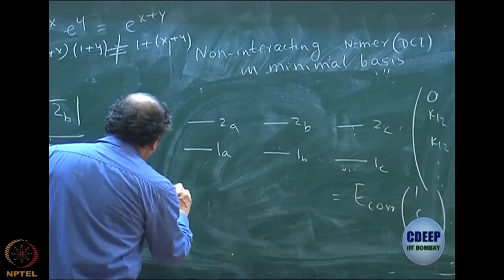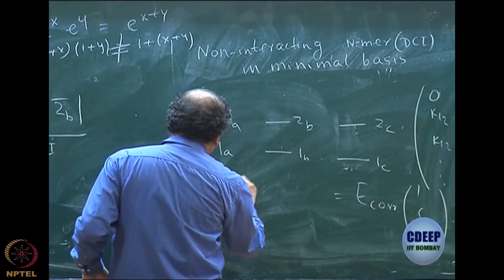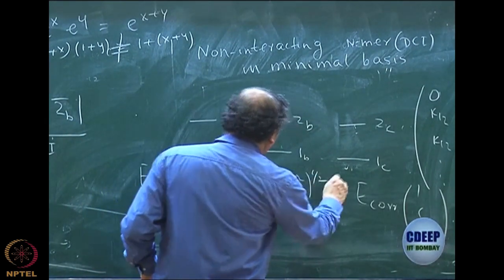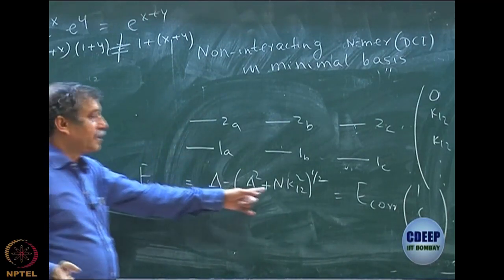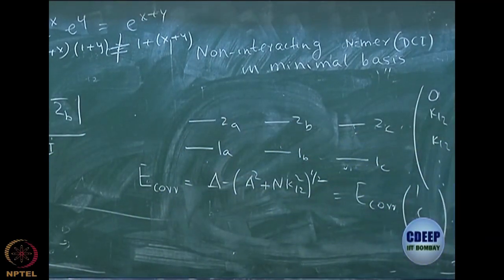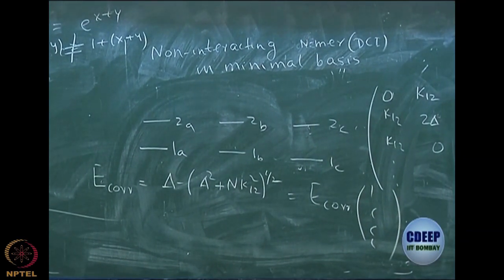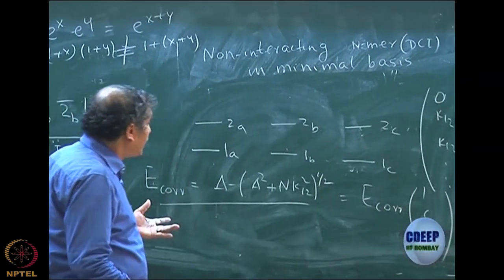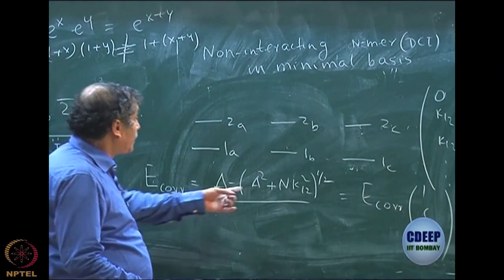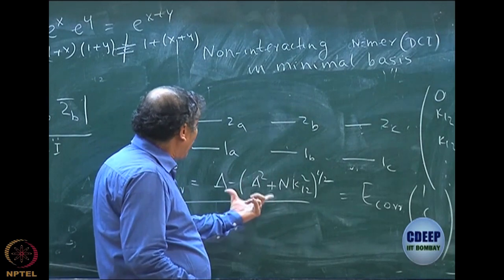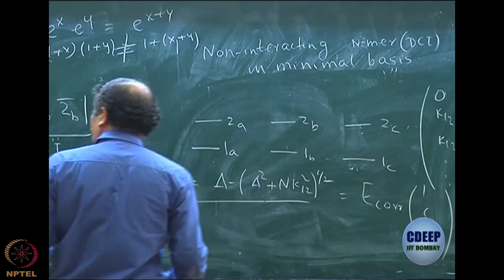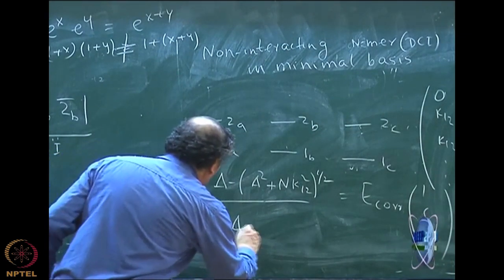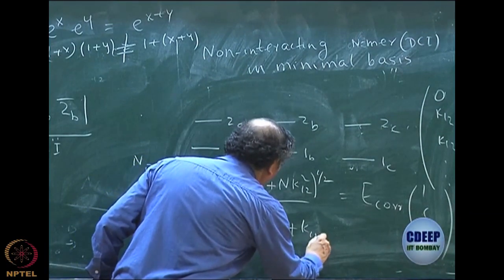The result you will get is: E_correlation = Δ − √(Δ² + n·K12²). Just as you would expect — where you got 2 for the dimer, you will get n. This is a trivial exercise: set up the quadratic equation, solve it, and you will get this result. Remember, E_correlation for the monomer is: 1·(Δ − √(Δ² + K12²)), and this is n times E_correlation for the monomer.